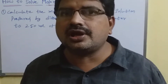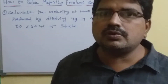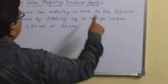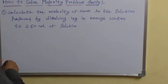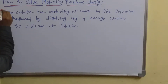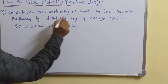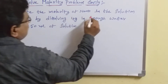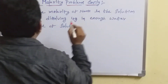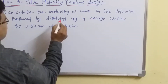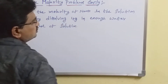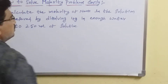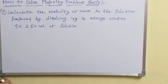Today's session, we are going to calculate molarity problems easily. How to solve molarity problems easily? This is the first problem. Calculate the molarity of NaOH in the solution prepared by dissolving 4 grams in enough water to make 250 ml of solution.